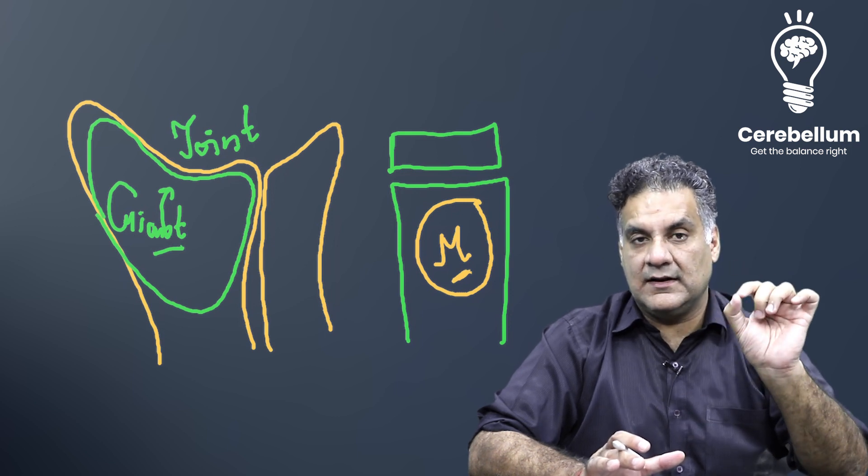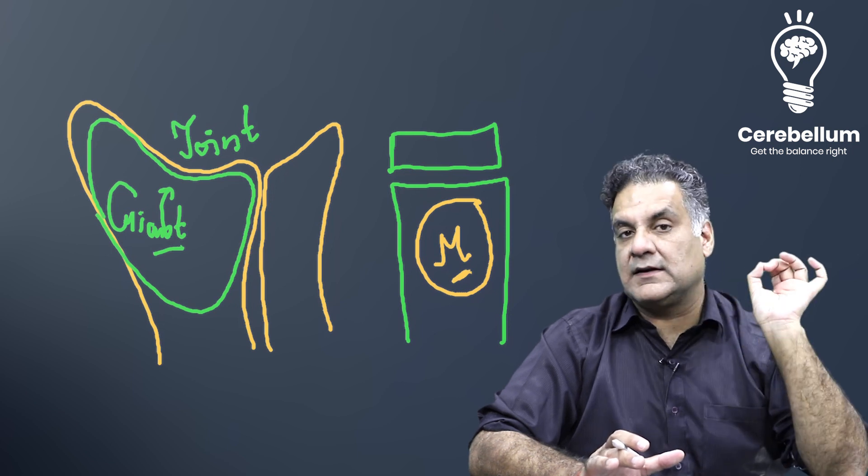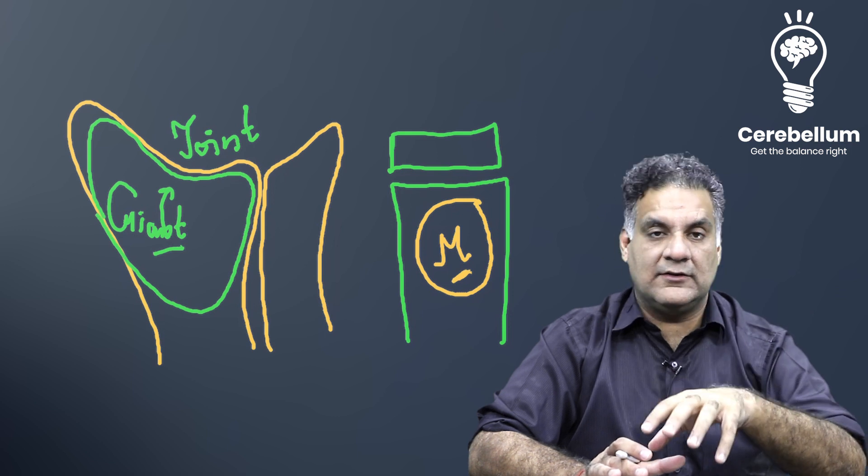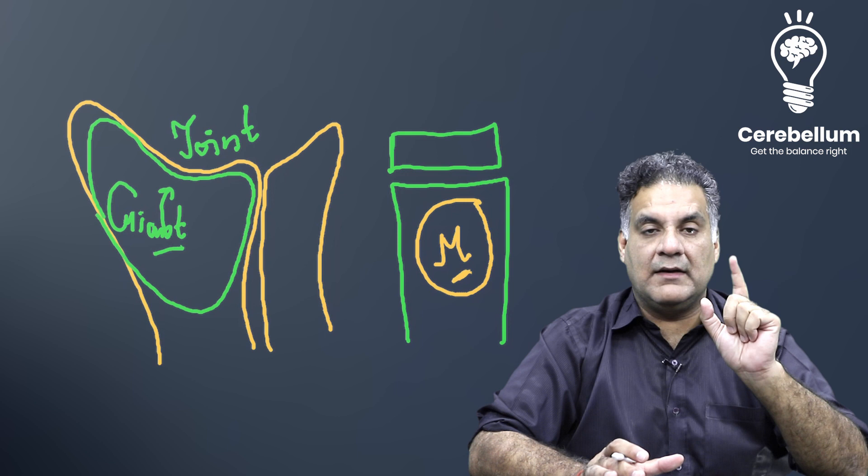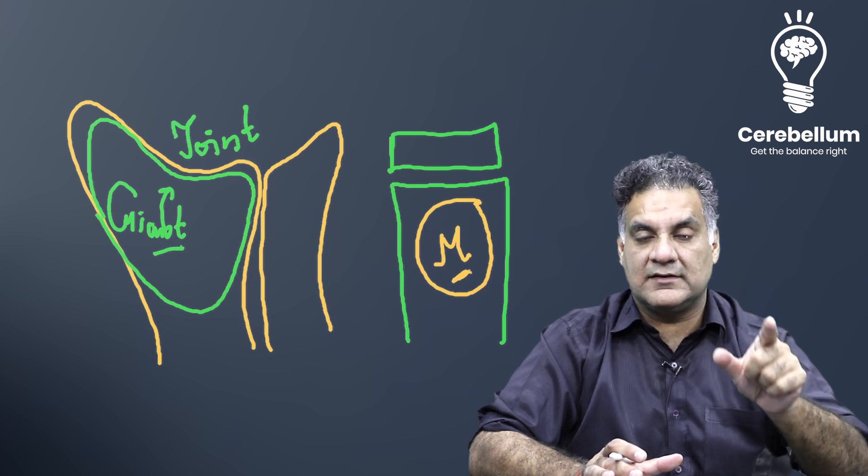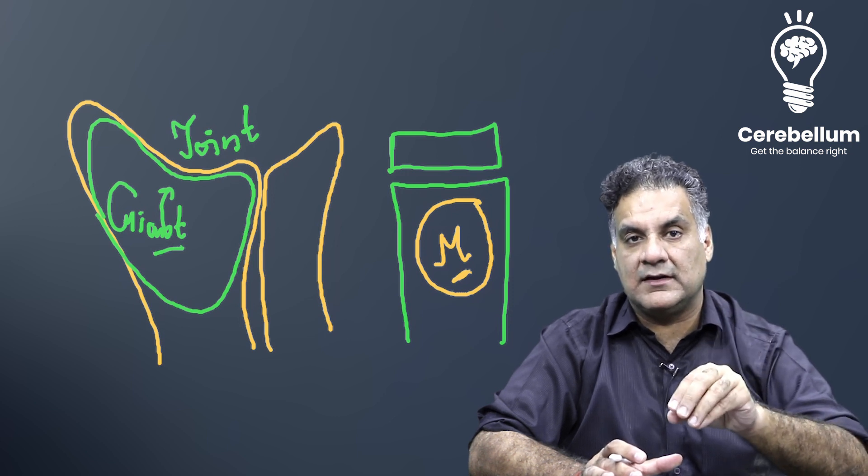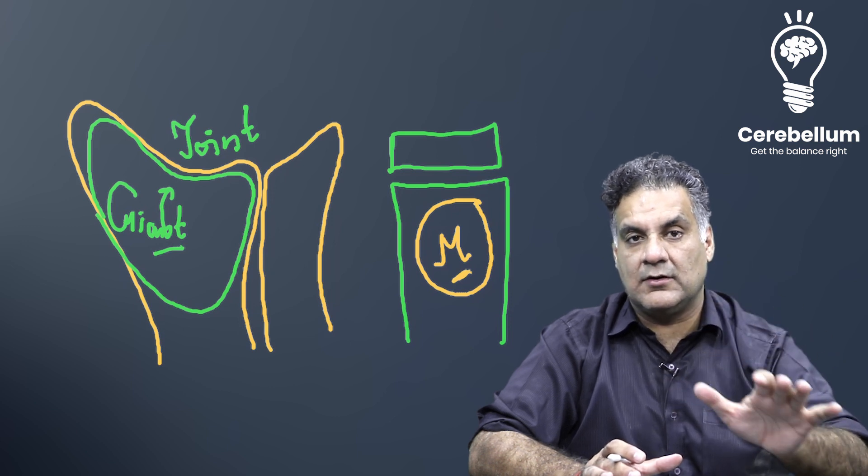One more question that has been asked in 2021 NEET exam. They had asked you the characteristic cell with which you will diagnose a giant cell tumor. Although it is called as a giant cell tumor, but it has got a malignant component of mononuclear cells which define it. So M for mononuclear, N for malignant component. This is the tumor component of the giant cell tumor. It is not the giant cells which are the tumor component.